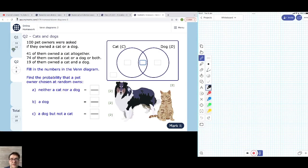Okay, so we're doing Venn Diagrams 2 from MyEyeMaths, and we're on question 2, cats and dogs. 100 pet owners were asked if they owned a cat or a dog.